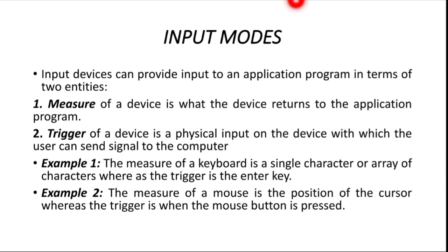The measure of a keyboard is a single character. Whatever character you type using a keyboard, that is the measure. You can type a single character or multiple characters using a keyboard. The trigger is the enter key. Whenever you press keys on the keyboard, the ASCII value of that particular key will be displayed on the screen. The enter key acts as a trigger.